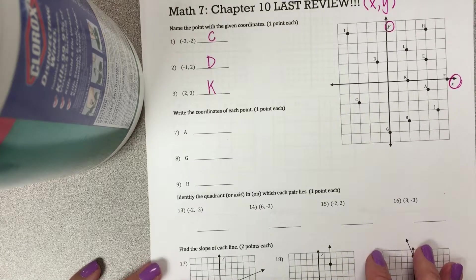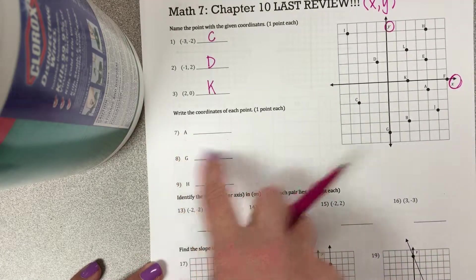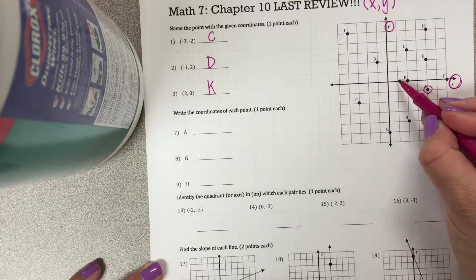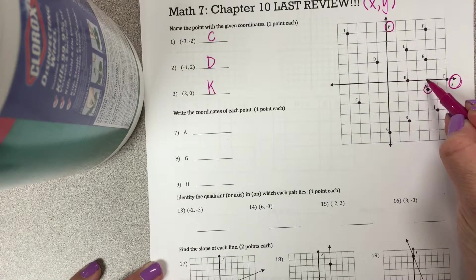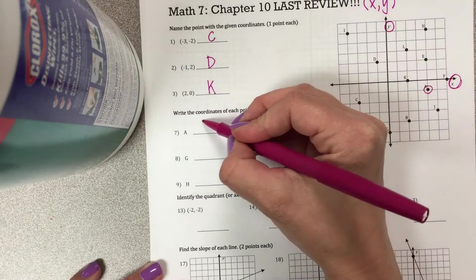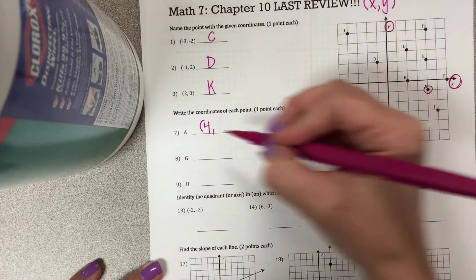The next section, letter A. So here's A. So on my X-axis, I'm at 1, 2, 3, 4. And on my Y, I'm at negative 1.